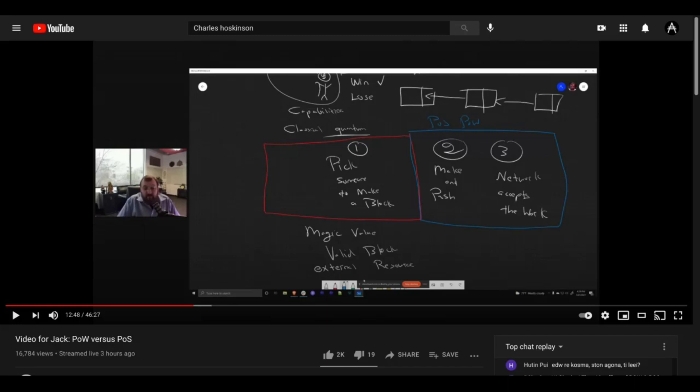He says blockchain solve this. But in a blockchain, we have to come to some kind of consensus about who's going to make the next block and what's going to be in the next block. Charles says there are three steps. You've got to pick someone to make the next block. You've got to have that person make the next block and push it out to the network, distribute it to the network. And then the network has to accept that block into the blockchain.